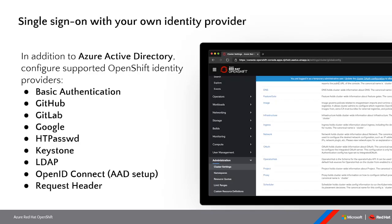We'll touch on some of the new features before going into demos. When you create a new ARO cluster, you'll assign an identity provider. Initially you get a special user called kubeadmin with a password — intended as a temporary user. You then choose your preferred identity provider from an extensive list, including Azure Active Directory for single sign-on. We'll cover that more further in the webinar.